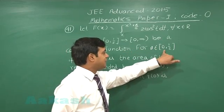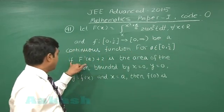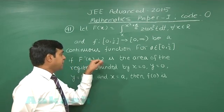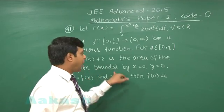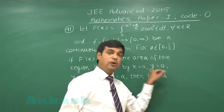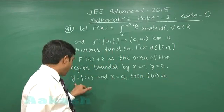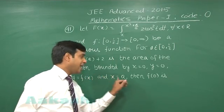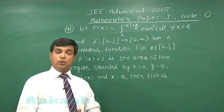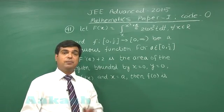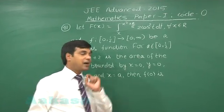For a from the set [0, 1/2], if F'(a) + 2 is the area of the region bounded by x = 0, y = 0, y = f(x) and x = a, then f(0) is... So we have to find the value of the term f(0). Let us start with this question.